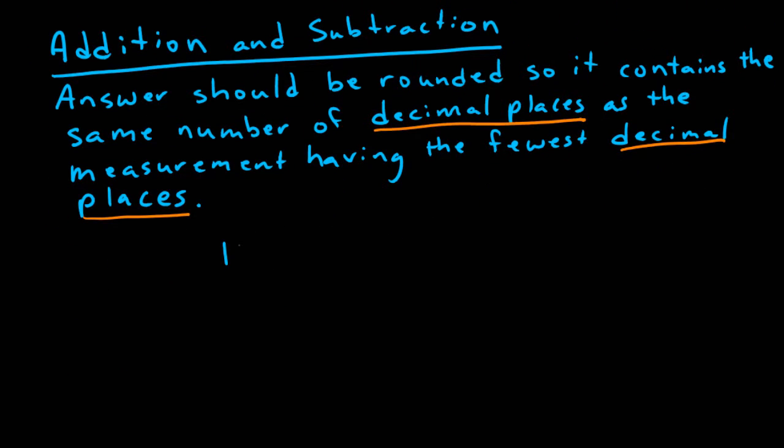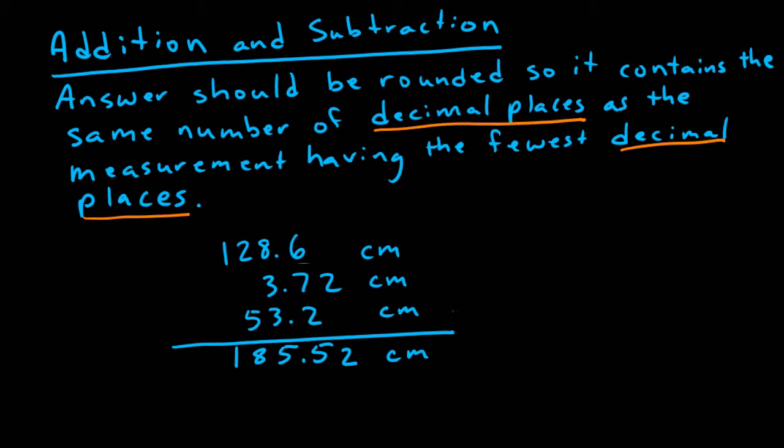To apply the rule for addition and subtraction, let's consider this example. If we sum the values together, we wind up with 185.52 centimeters. Since 128.6 and 53.2 go out to the tenths place, this means we should round our answer off to the tenths place, and we wind up with 185.5 centimeters.